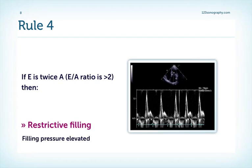Rule four: if the E velocity is twice or more than twice the size of the A velocity — in other words the ratio is above 2 — then the patient must have a restrictive filling pattern and left atrial or left ventricular filling pressures are usually significantly elevated.